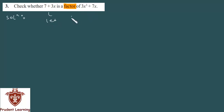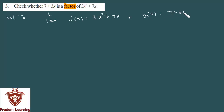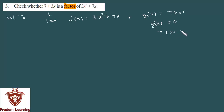नाम दे देते हैं — let f(x) = 3x cube plus 7x, यह हमारे लिए f(x) है। और 7 plus 3x को say g(x) बोल दीजे। तो logic यह है कि आपको g(x) का zero निकालना है, उसके लिए g(x) को equate करेंगे 0 से — मतलब 7 plus 3x को 0 से equate करेंगे, इससे x की value मिलेगी।